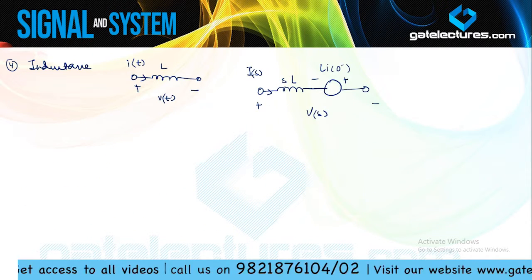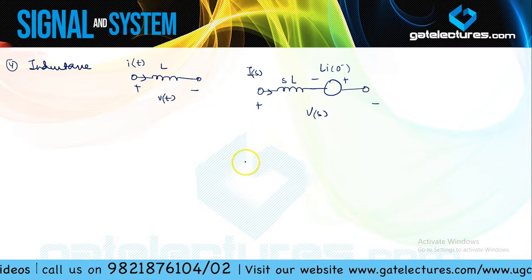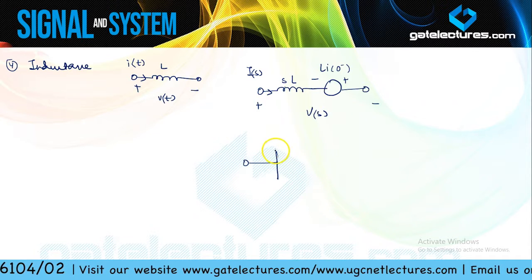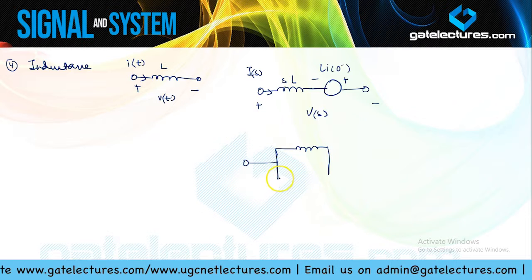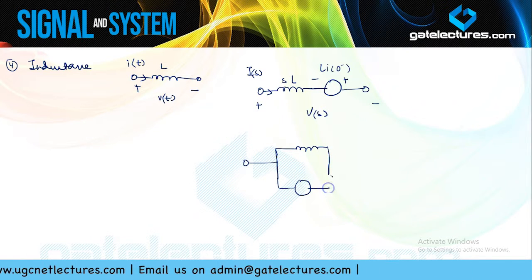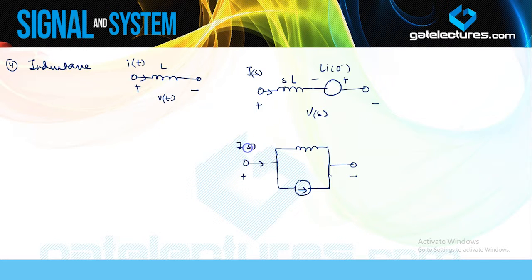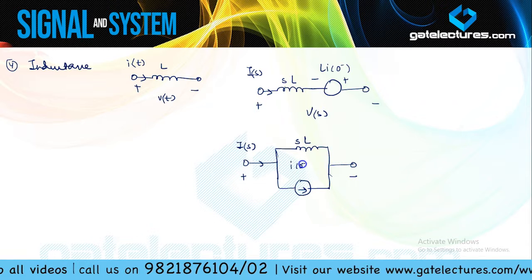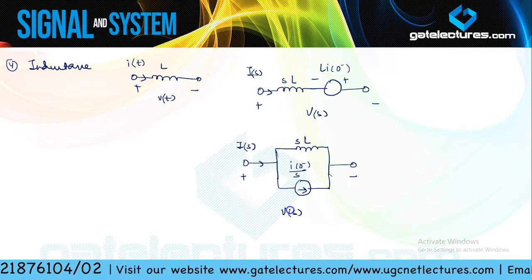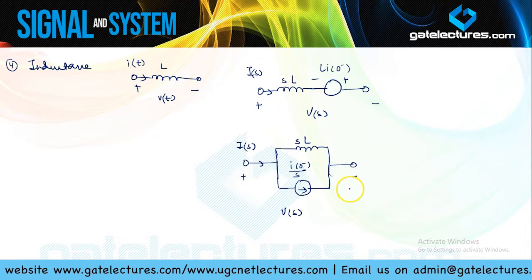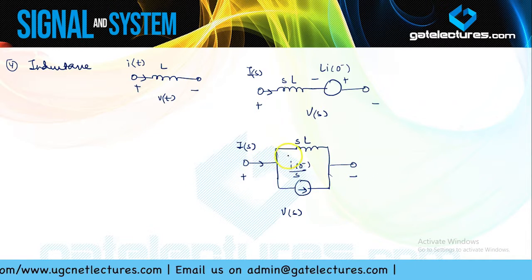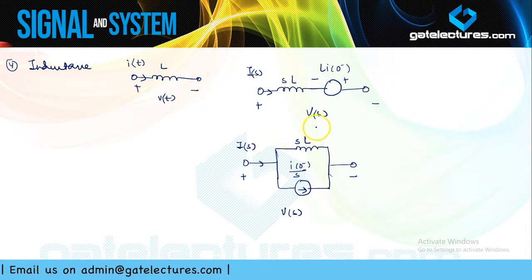Currents add up in parallel, so we are going to place these elements in parallel when considering the current equation. That constant term is also going to be a current element because it is a current equation. So the total current is I(s), the element is represented by SL, this element has value I(0⁻)/S, and V(s) is the complete voltage across this element. So this is how we transform inductance into the S domain — in terms of voltage it looks like one representation, and in terms of current it looks like the parallel representation.